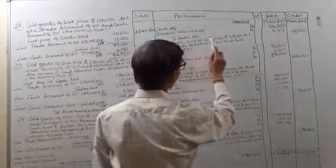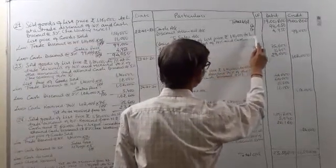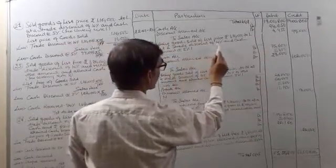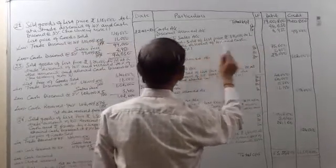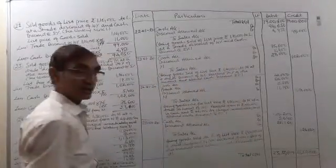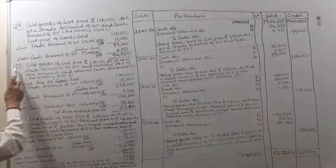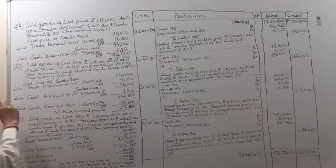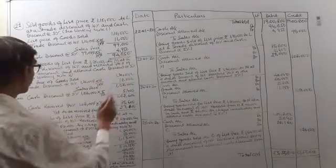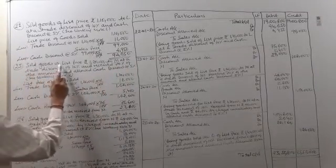The sales price of 99,000 will be recorded in the sales account. The narration: goods sold of list price rupees 1,10,000 to L at a trade discount of 10% and cash discount at the rate 5%. That's clear. Now the 23rd transaction: on 23rd January, goods of list price rupees 1,20,000 were sold to M.